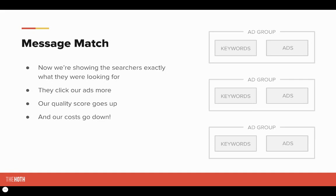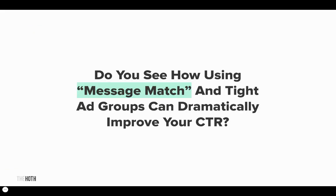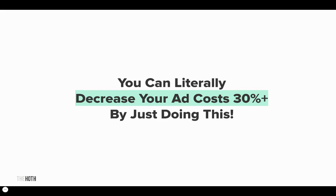It's a really easy fix. It's all about structuring your campaigns and going that extra step when setting up your ads. Inside each ad group, you want a proper set of keywords that relate to each other — if it's veneers, everything should be about veneers in that ad group, and your ads should match as well. Each ad group should have your different services broken down. Do you see how using message match and tight ad groups can dramatically improve your click-through rate? You can literally decrease your ad costs by 30% or more by just doing this one thing.